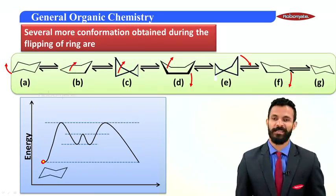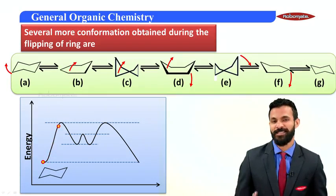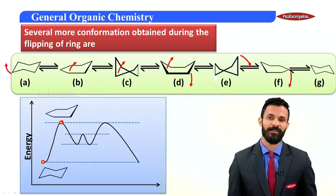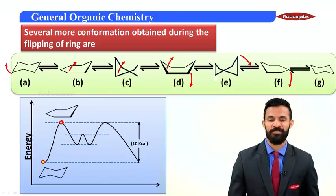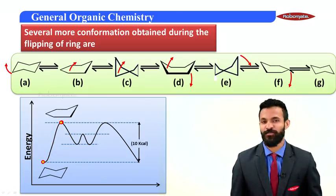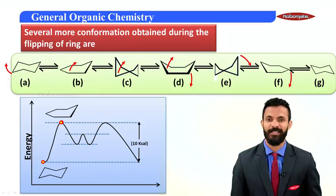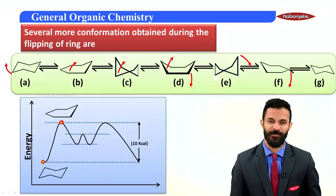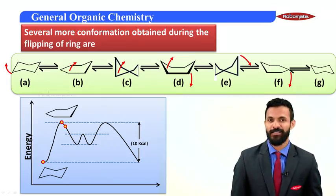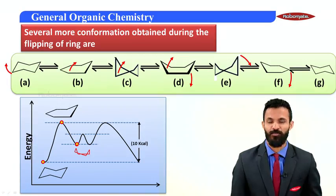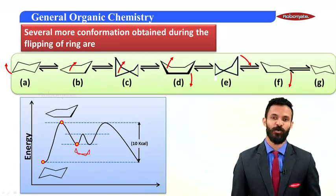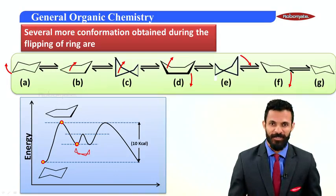In the process when flipping starts, the chair conformation gets converted to the next one, which is the half chair. The chair and half chair conformations are separated by an energy barrier of 10 kilocalories. This half chair in the flipping process further gets converted to a twist boat.